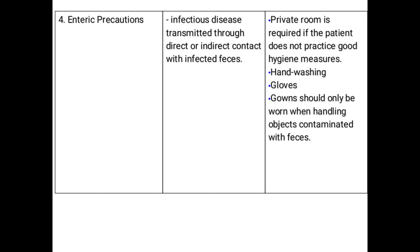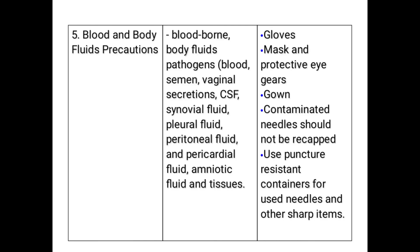This is called blood and body fluid precautions. Blood and body fluids that are considered pathogenic include: blood, semen, vaginal secretions, cerebrospinal fluid (CSF), synovial fluids, pleural fluid, peritoneal fluid, pericardial fluid, amniotic fluid, and tissue. All of these body fluids require precautions.